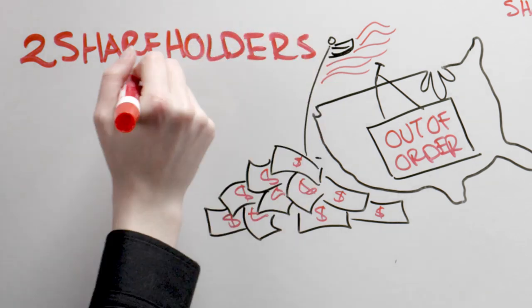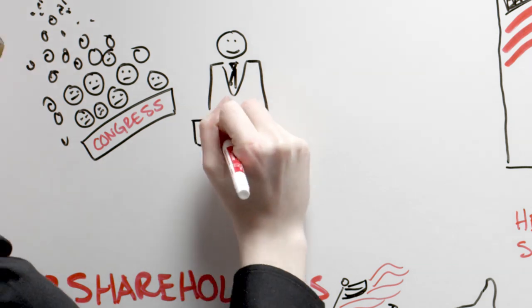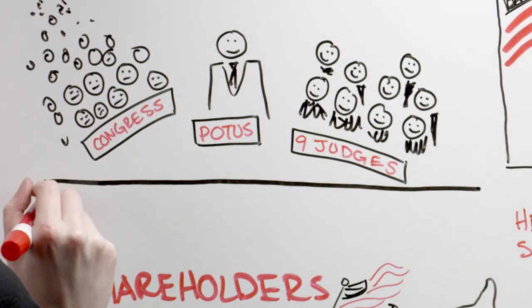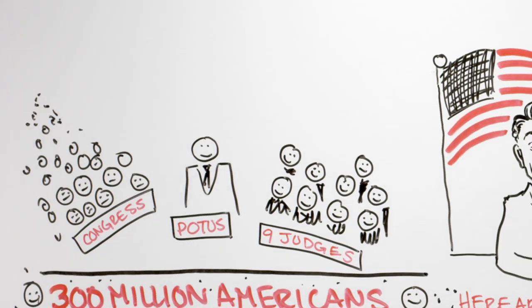Two: shareholders versus citizens. There are 535 people in Congress, the president, and nine judges. All of these politicians and judges answer to over 300 million Americans. That's a lot of decision-makers, but it's this system of checks and balances that works to ensure each person's voice is heard.